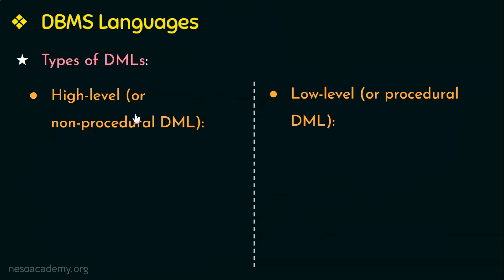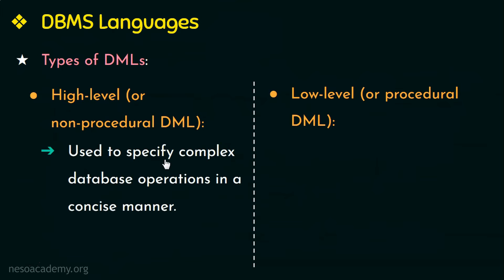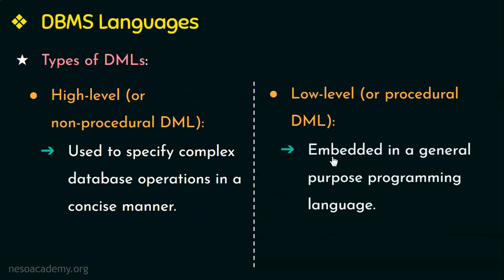High-level DMLs are used to specify complex database operations in a concise manner, whereas low-level DMLs are embedded in a general-purpose programming language like C, C++, or Java. This general-purpose programming language is called the host language, and the DML commands embedded in it are called the data sub-language.